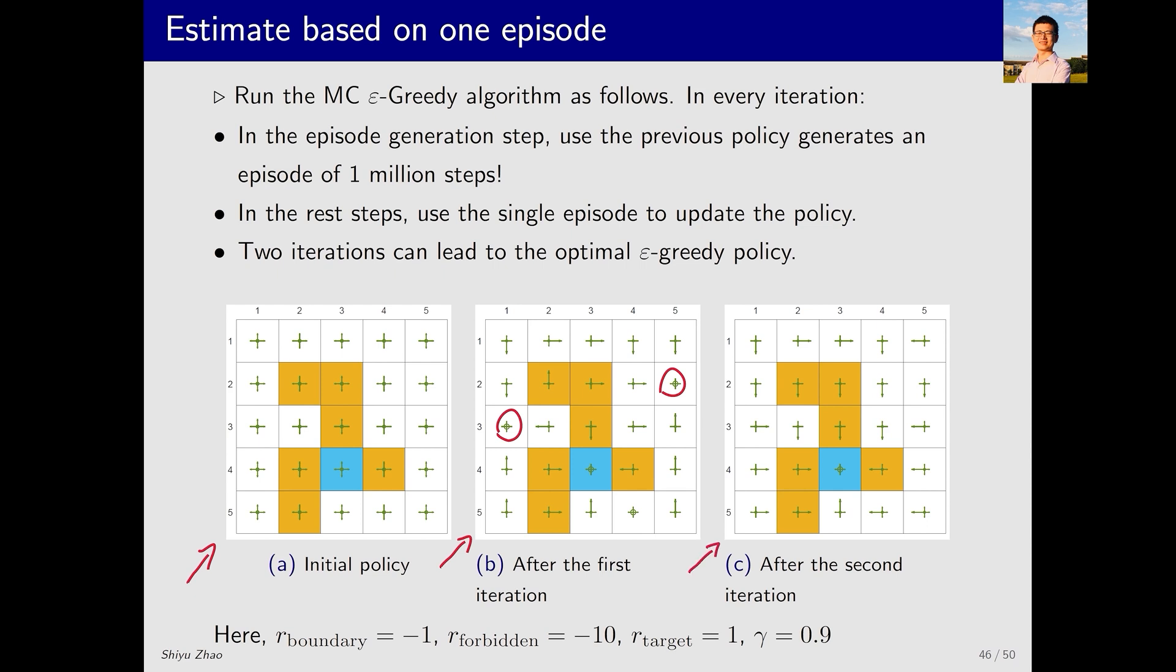If we look only at the actions with the highest probability in this final policy, it is relatively reasonable compared to the second one. At least starting from any point, it could reach the target, but it would pass through obstacles. Therefore, from this perspective, it is not optimal since the optimal policy should navigate around obstacles to reach the target. In summary, the epsilon greedy policy indeed gains some benefits from its exploratory nature, but at the cost of optimality.